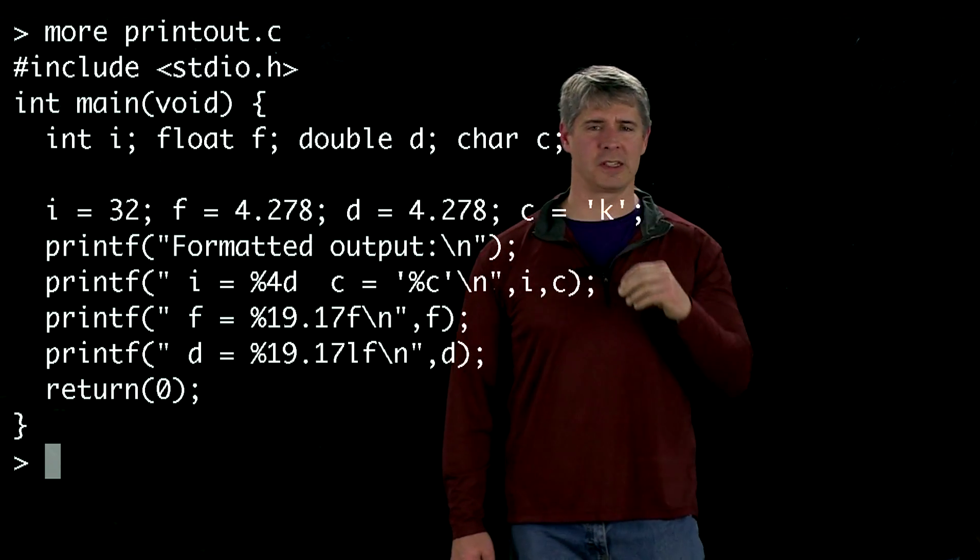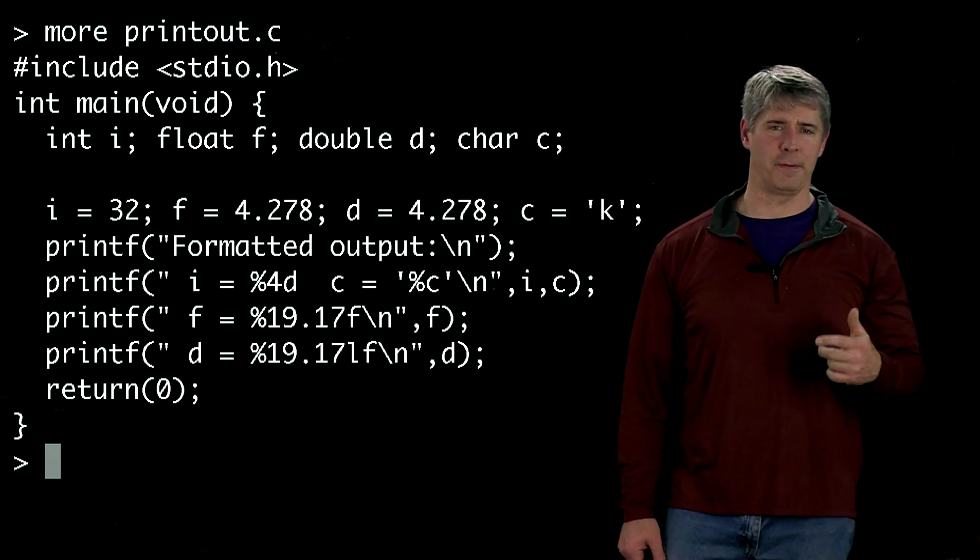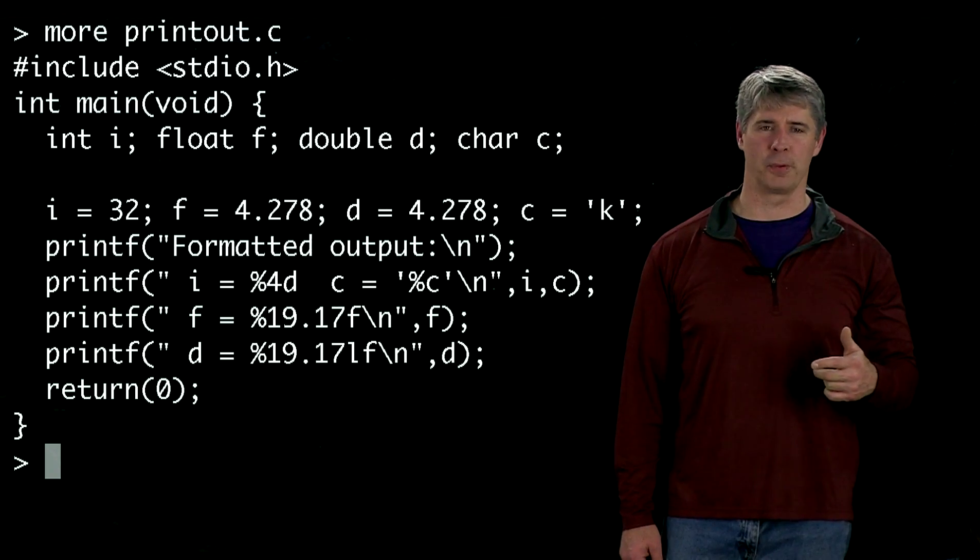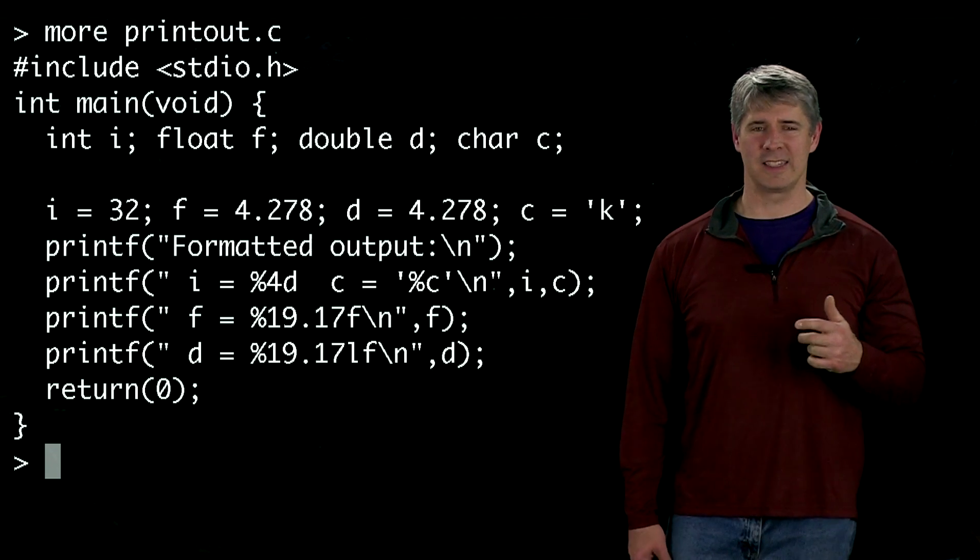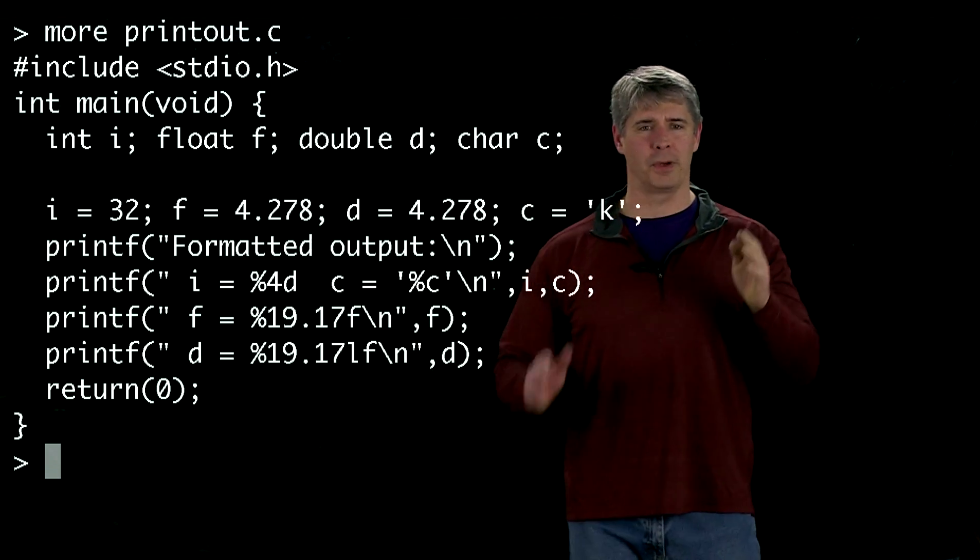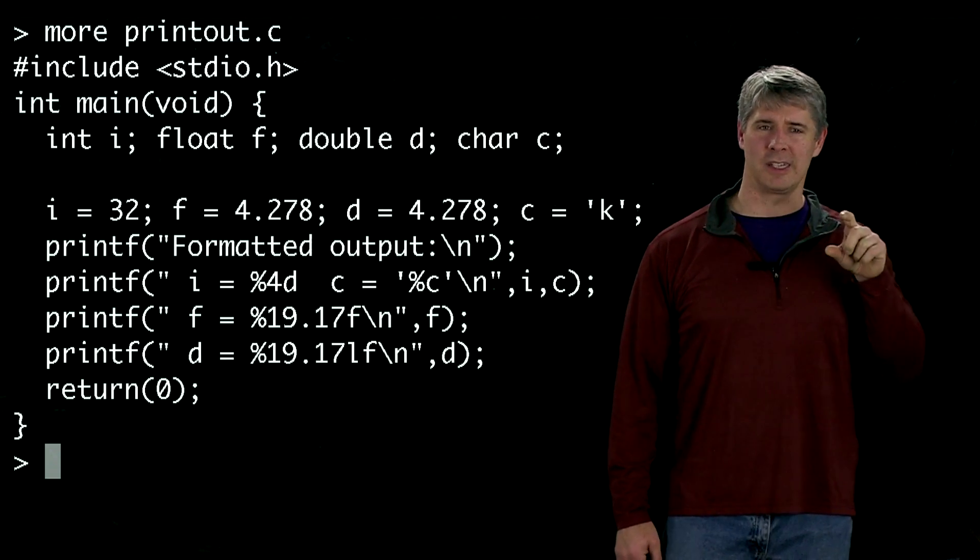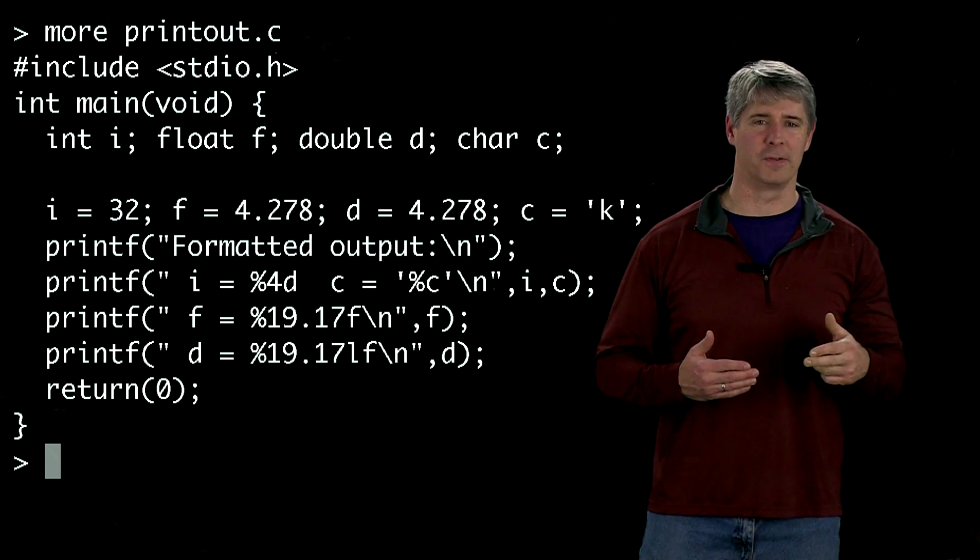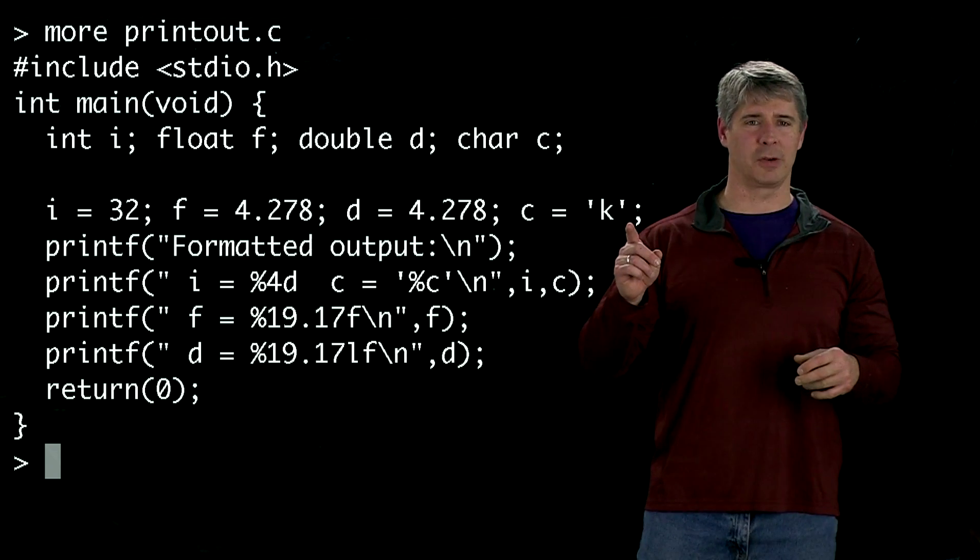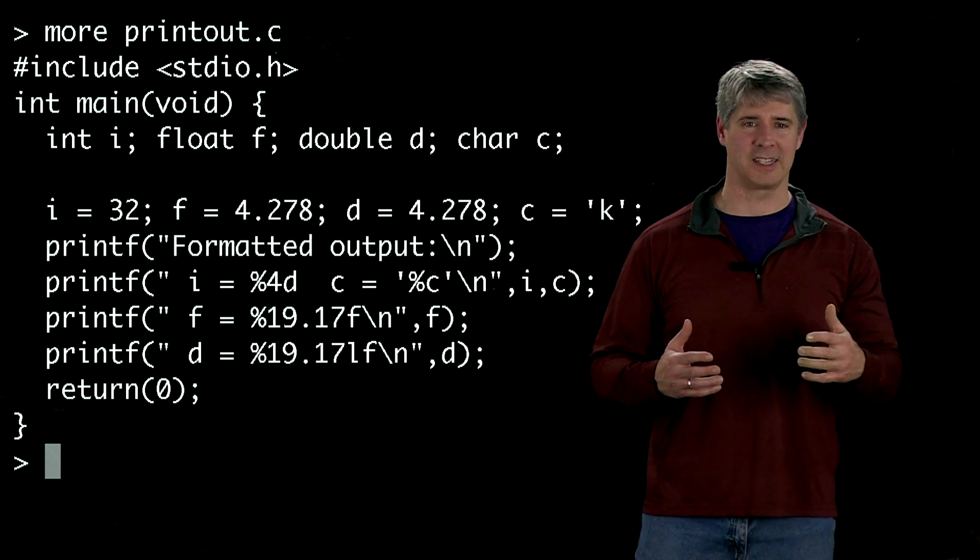And then after that, in this line, we assign values to them. So i is given a value of 32, both f and d are given values of 4.278, and c is given the value of k. Now here we put the k in the single quotes, and what that means is it's going to take the character k and actually convert it to a numerical value. So this is actually equivalent to saying c is equal to 107. If we looked at the ASCII table, we would see that the numerical value for k is 107.